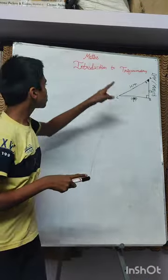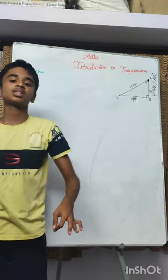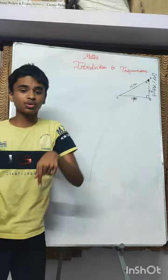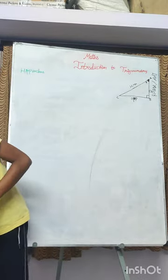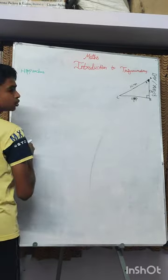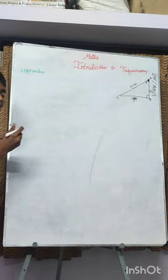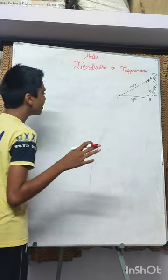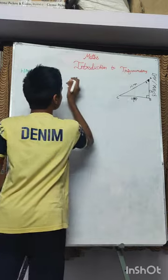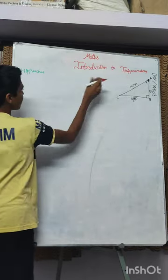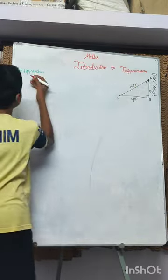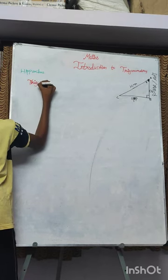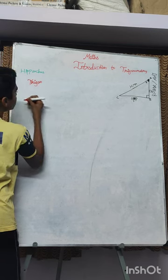Trigonometry has six ratios — each angle has six ratios. Before that, let me tell you that trigonometry can be divided into two parts. The first part is 'trigon' and the second part is 'metri.'